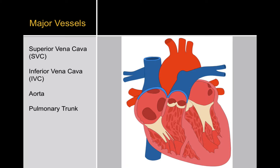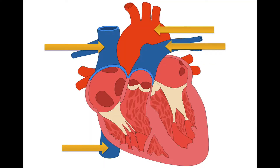Superior vena cava, inferior vena cava, aorta, and pulmonary trunk — and sometimes I just call the pulmonary trunk PT as well. I add that abbreviation in there. The major vessels here are labeled with the yellow arrows.